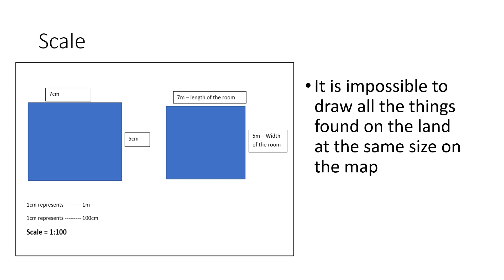Let's look at this example. There is a particular room with the length of 7 meters and the width of 5 meters. Length is 7 meters, width is 5 meters. So, if we are to draw this on a map, we can't find such a big paper, or even if we find a paper, it is not practical. So, we have to reduce the size to fit into the paper we are using.